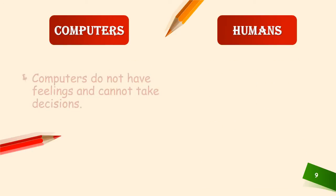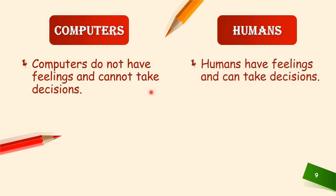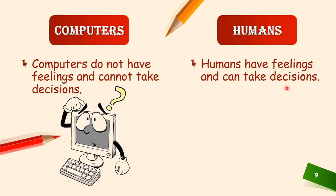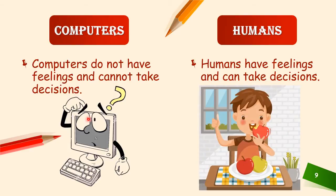Computers do not have any feelings and cannot take any decisions. But human beings have feelings and can take decisions. For example, if your mother gives you an apple, you know it is good for health, you can decide to eat it and taste its sweetness. But a computer cannot feel, decide, or know that the apple is good for health.